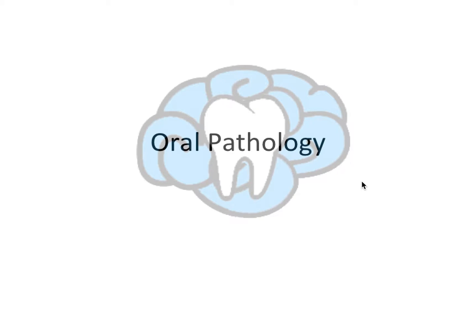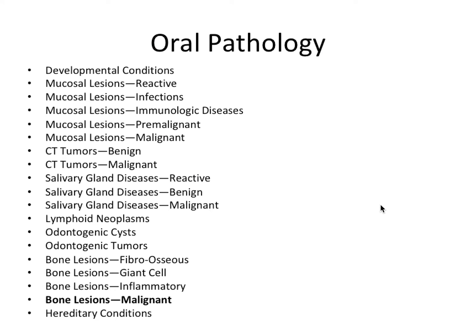Hey guys, it's Ryan. Welcome back to another oral pathology video. This time we're going to finish up talking about bone lesions by talking about malignancies. As you can see, for each tissue layer we ended with malignancies because they are the most lethal and dangerous of the lesions we talk about for each tissue layer.